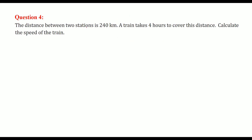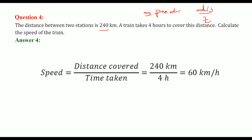The distance between two stations is 240 kilometers. A train takes 4 hours to cover this distance. Calculate the speed of the train. Speed equals distance divided by time — this is a very important formula for later classes too. So speed equals 240 kilometers divided by 4 hours, which gives 60 kilometers per hour.